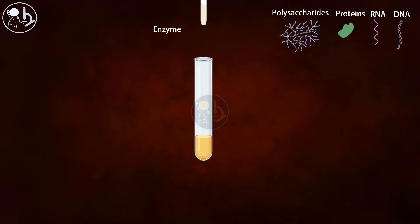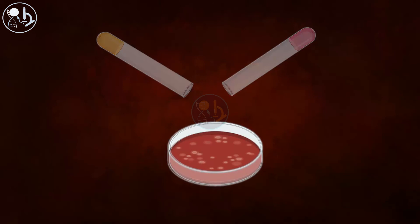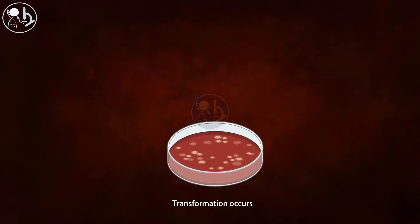They first removed the polysaccharides from the extract, then mixed it with the live 2R bacteria and cultured it in a plate. Transformation occurred, indicating polysaccharides could not be the transforming agent.